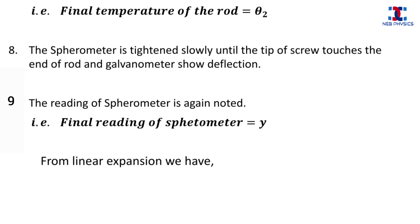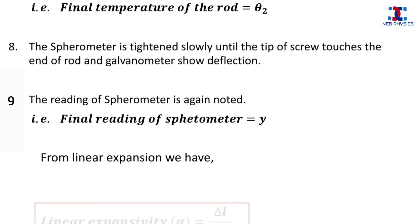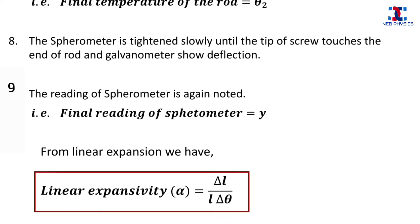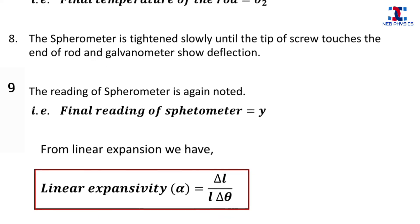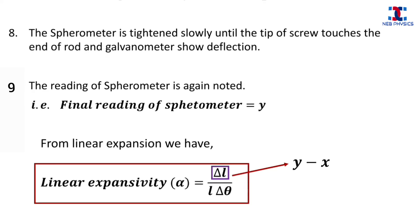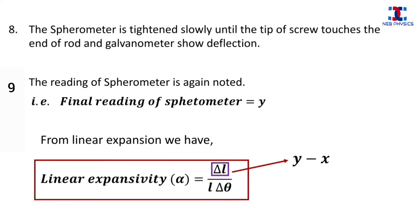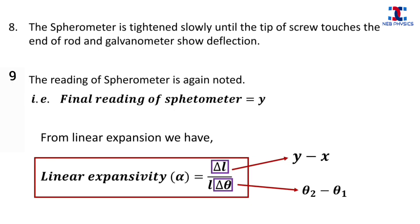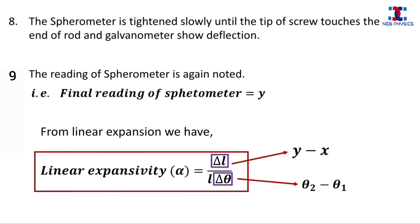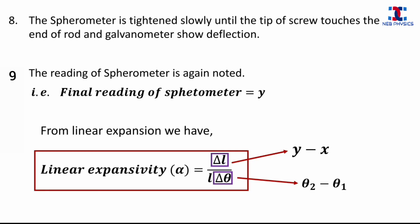Now from linear expansion, we have the coefficient of linear expansion alpha equals delta L divided by L times delta theta. Here delta L equals the final reading of spherometer minus the initial reading of spherometer, and delta theta equals the final temperature of rod minus the initial temperature of rod. Since we know all the quantities on the right hand side, we can easily calculate alpha, which is the coefficient of linear expansion of the given metal rod.